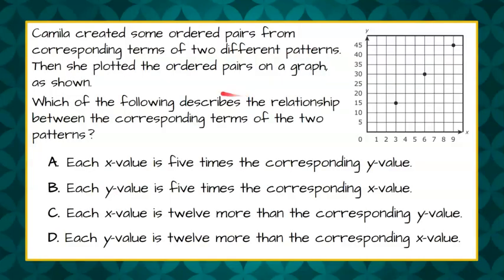Here's our problem. Camilla created some ordered pairs from corresponding terms of two different patterns. Then she plotted the ordered pairs on a graph as shown. Which of the following describes the relationship between the corresponding terms of the two patterns?